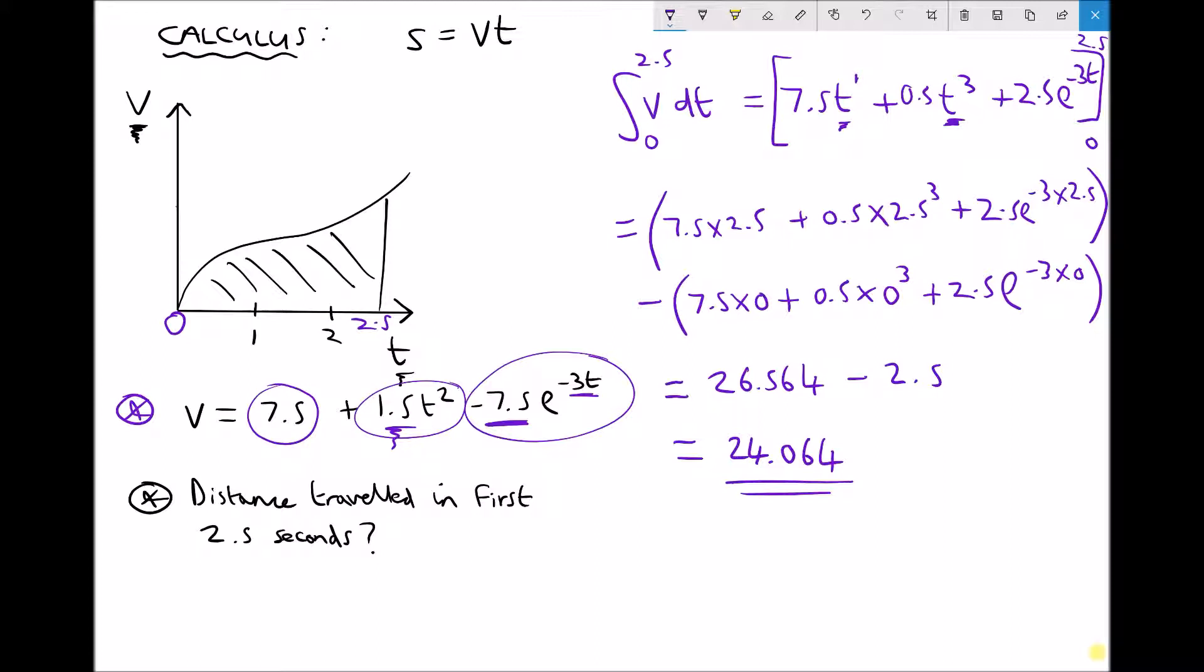So 24.064 represents the shaded region on our graph. But more importantly, what it represents is s, the distance travelled. And we know that because we defined at the start that the area under the graph was the distance, and we've used integration to find the area under the graph, which in this instance is 24.064.